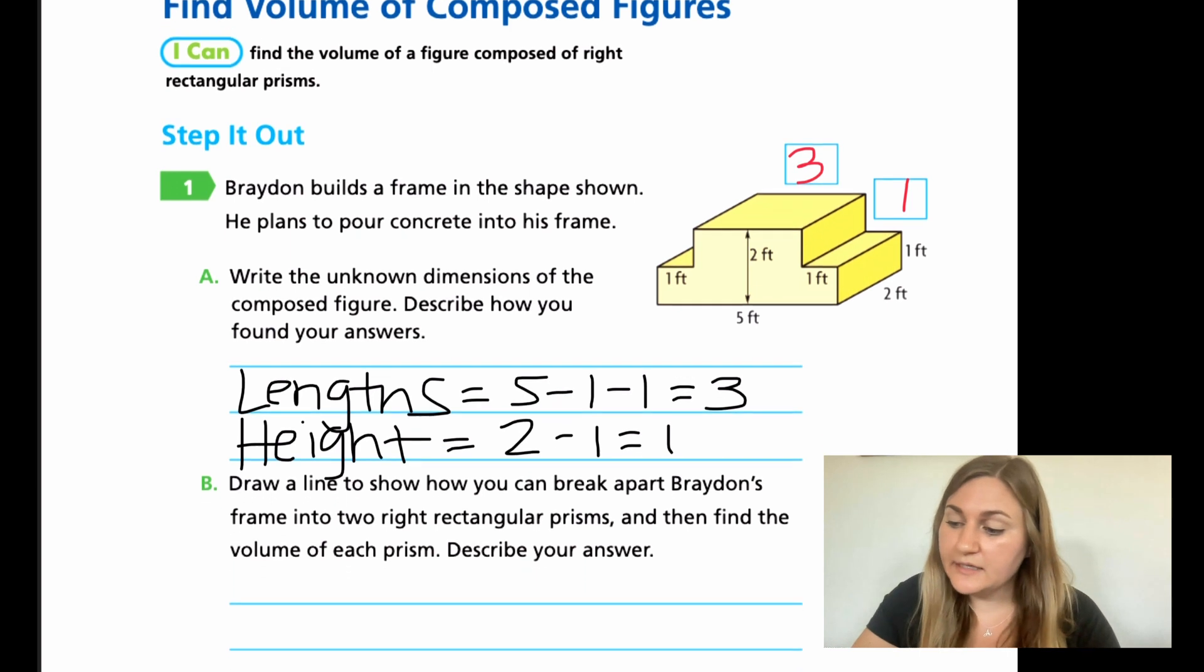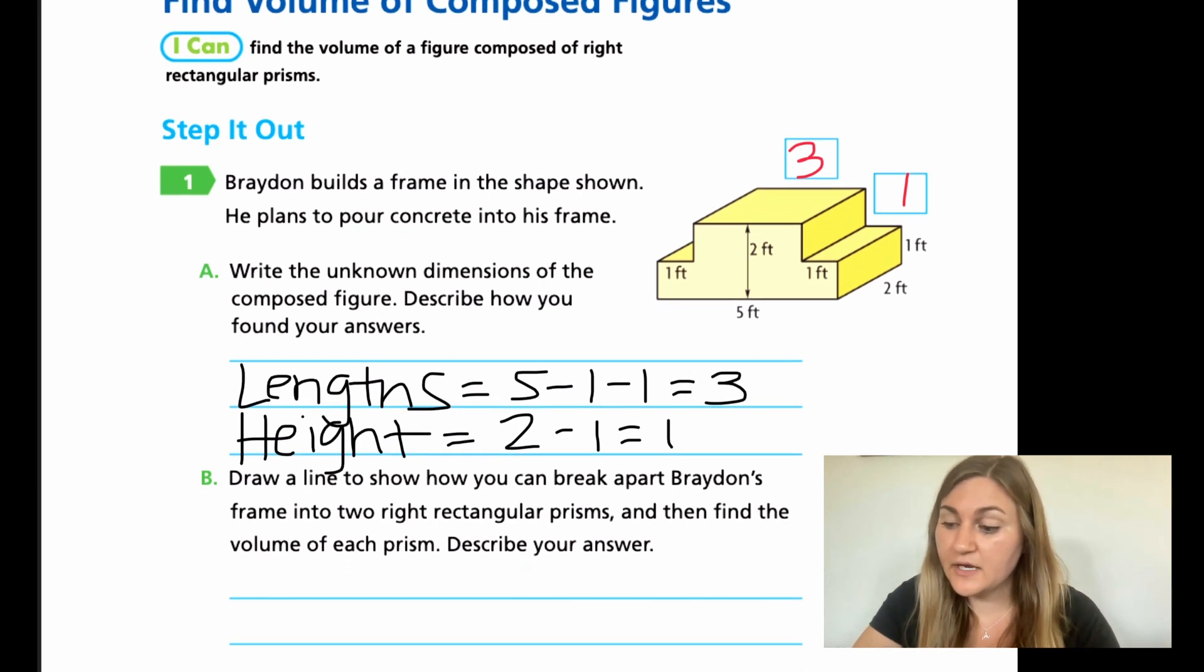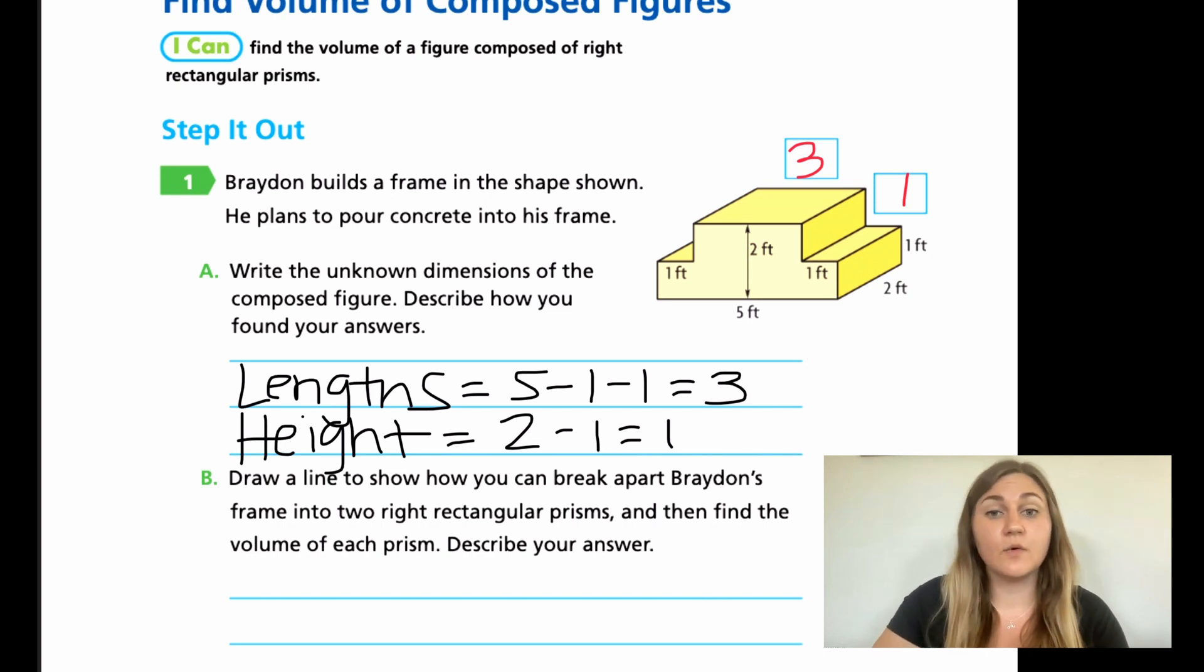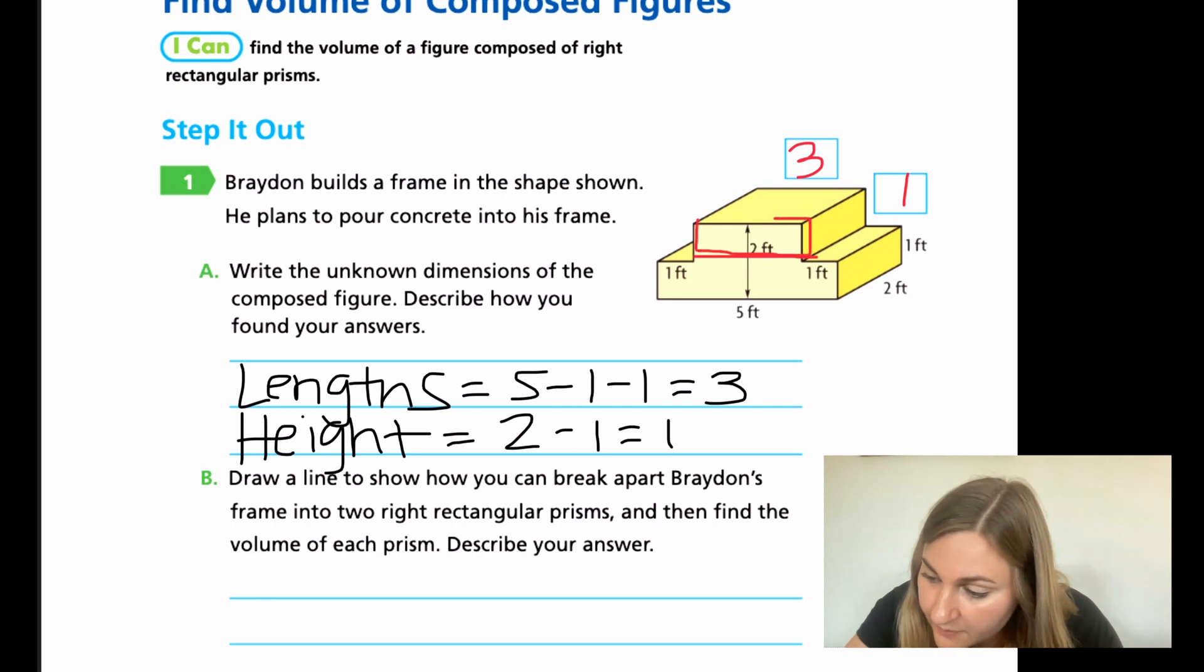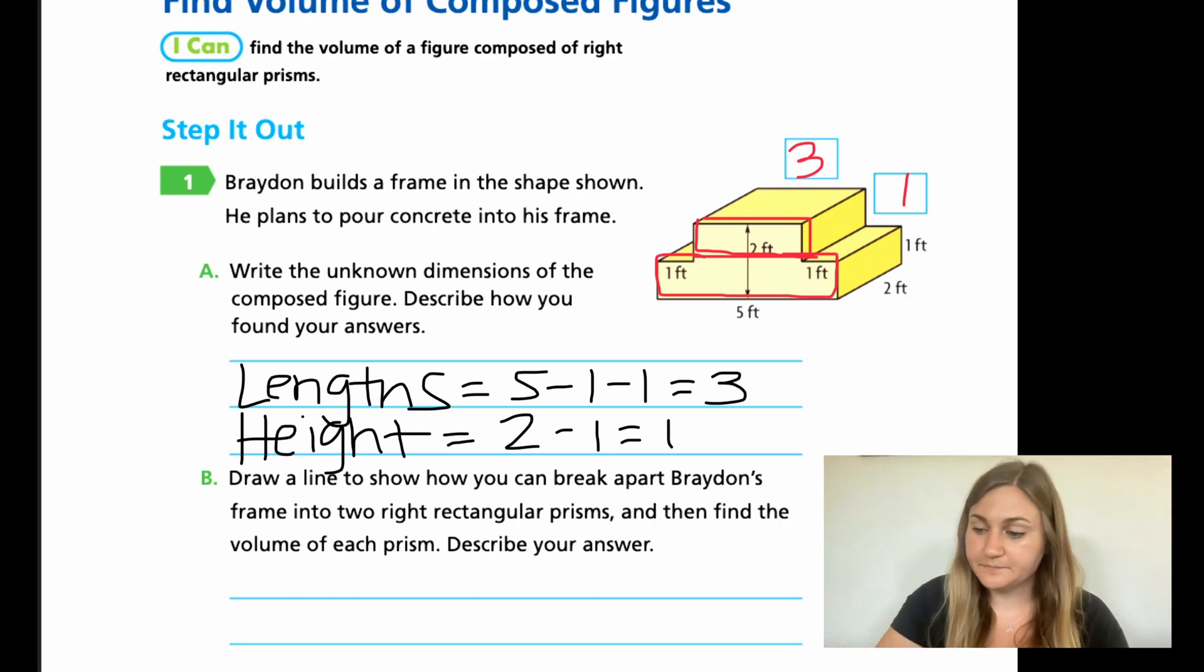Moving on to B. Draw a line to show how you can break apart Braydon's frame into two right rectangular prisms. This is the most important part with finding composed figures. You need to be able to find the line to break this odd shape apart into two rectangular prisms, because we've already been working on that and we already know what to do with that. So in order to break it, I'm going to put a line straight across here. Now I have this shape here and this shape here. I have my two right rectangular prisms.